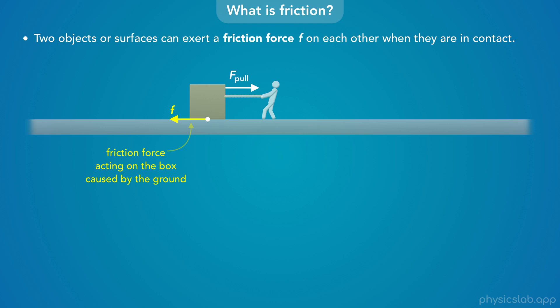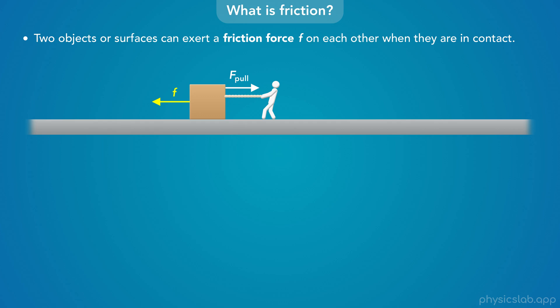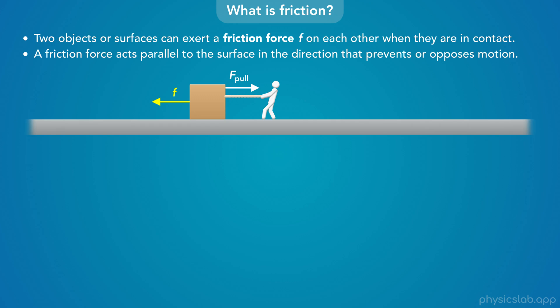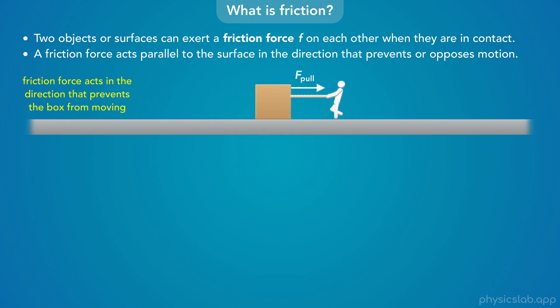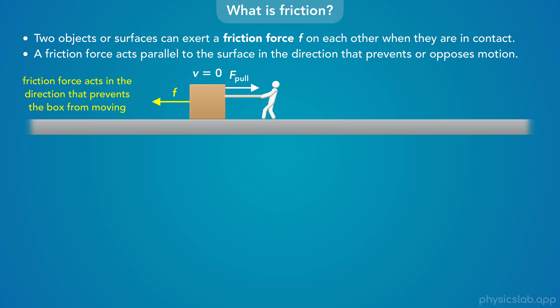A friction force acts where two objects, or surfaces, are in contact. So this friction force acts on the bottom of the box, where it's in contact with the ground. We usually draw forces starting on the side of the object so they're easier to see. One important thing to remember is that a friction force acts parallel to the surface, in the direction that prevents or opposes motion. So this friction force is parallel to the ground — they're both horizontal. If the box doesn't move, the friction points to the left because it's preventing the box from moving. Without that friction force, the box would move to the right, so the friction force must be acting to the left.